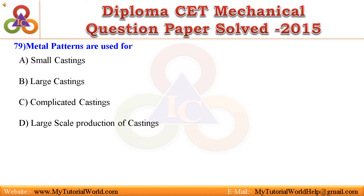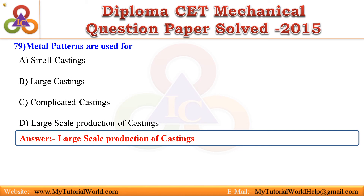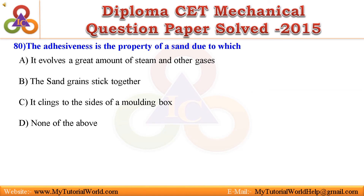Question 79 relates to large-scale production of castings. Question 80. The adhesiveness is the property of sand due to which: A. It evolves a great amount of steam and other gases, B. The sand grains stick together, C. It clings to the sides of a molding box, D. None of the above. Answer is it clings to the sides of a molding box.